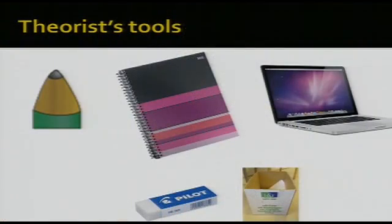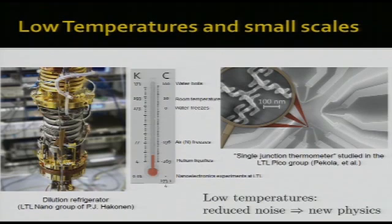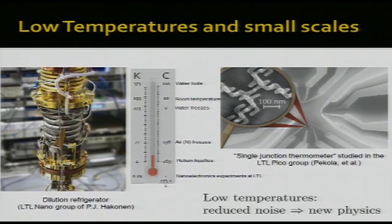Those were the experimental tools. They are fancy tools to create and measure nanostructures. Theorist tools are somewhat simpler — we often use a pencil. I actually bought a special pencil, at least three euros. We use notebooks and try to do things with pencil and paper. Since we are not philosophers, we also use a dress box and eraser.